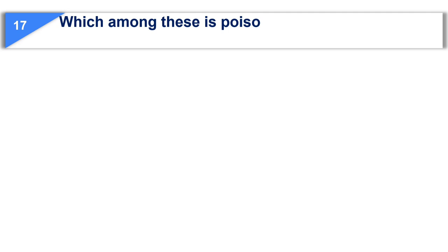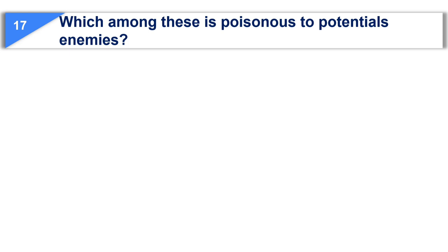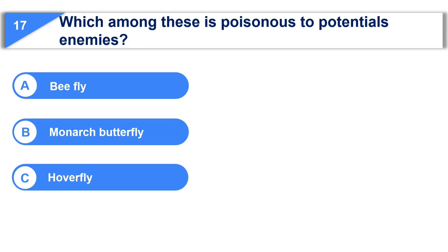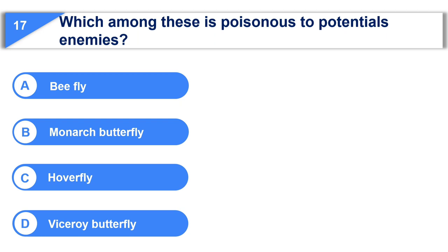Moving to the next question. Which among these is poisonous to potential enemies? Option A, bee fly. Option B, monarch butterfly. Option C, hover fly. Option D, viceroy butterfly.